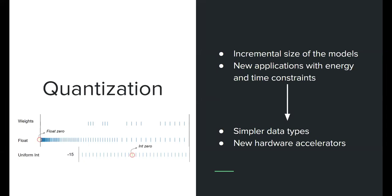The main idea behind quantization is to use simpler data types. As a toy example, imagine the weight distribution of a layer represented in floating point — you have a lot of precision around zero and can have very large values, but you need complex hardware for floating point operations. It's much easier to use an integer approximation: a uniform interval of values, mapping floating point values to integers, with some error but decent approximations.